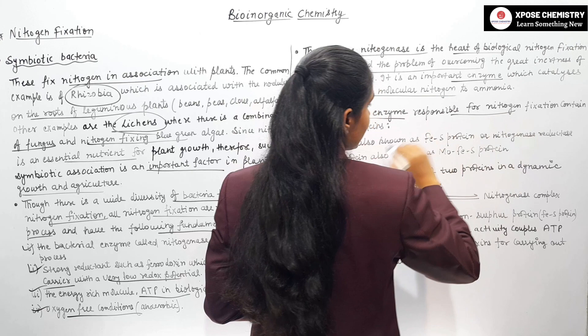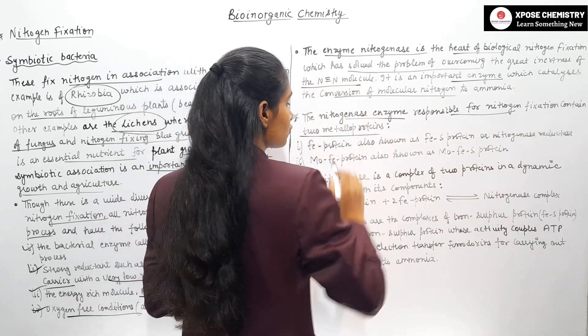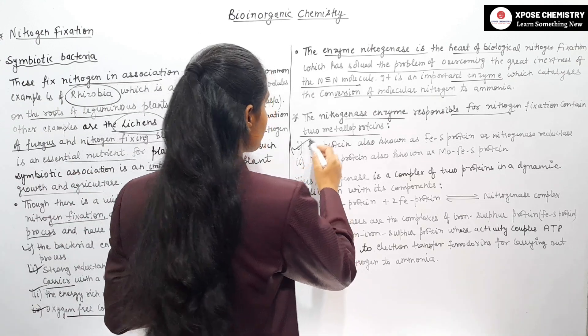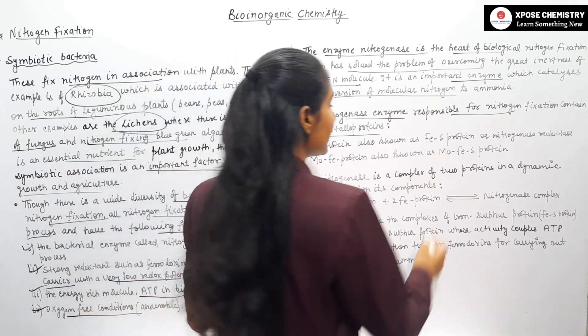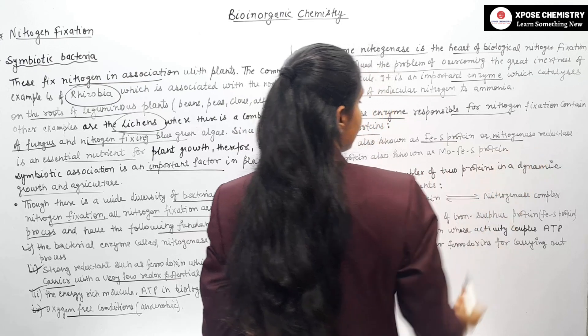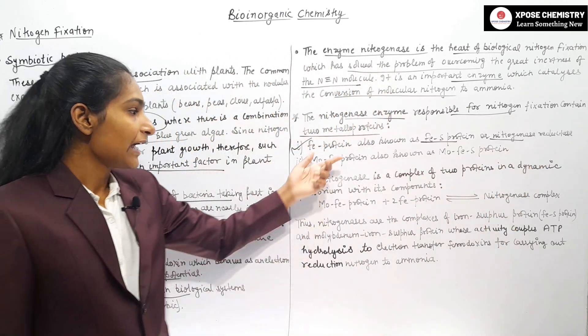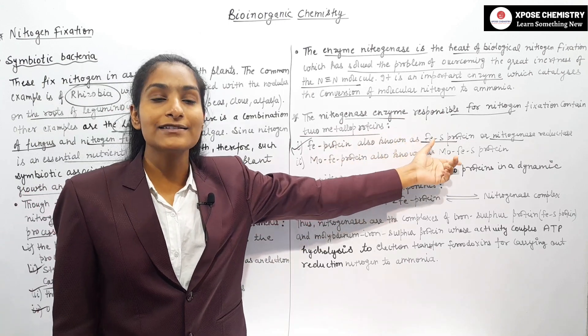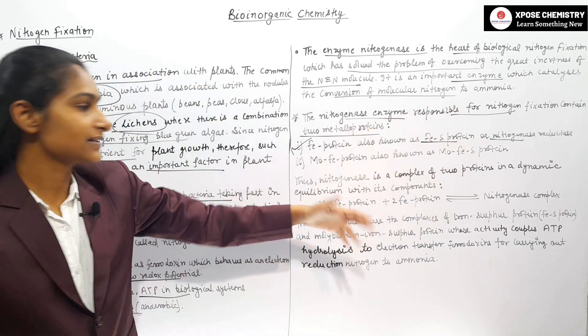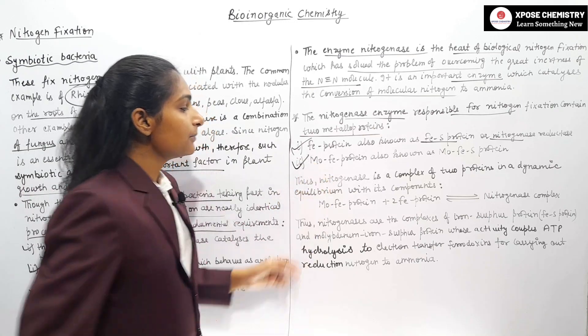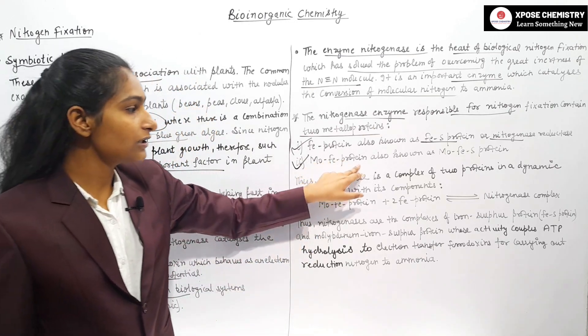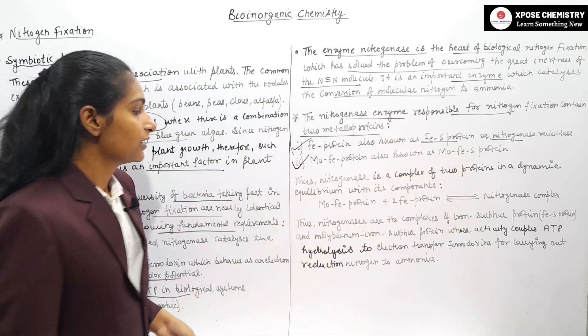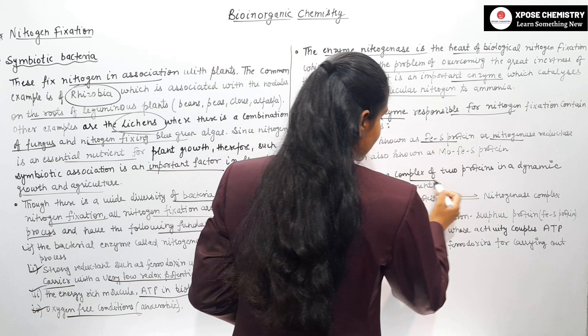Nitrogenase is responsible for nitrogen fixation and contains two metalloproteins. The first one is Fe protein, also known as iron-sulfur protein or nitrogenase reductase. The second one is Mo-Fe protein, molybdenum iron-sulfur protein.